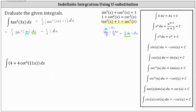Writing the first integral in terms of u: dx is equal to one third du, so let's factor out the one third. Then we have du, and secant squared 3x is now secant squared u. We still have minus the integral of one dx.